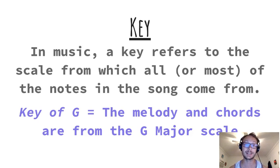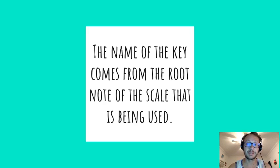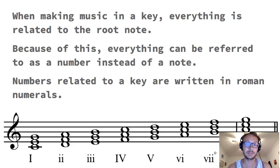Anything that's diatonic is in reference to any note or chord coming from the scale — like the key of G. The name of the key comes from the root note of the scale being used. When making music in a key, everything is related back to the root note, so everything can be referred to as a number. The numbers related to a key are often written in Roman numerals — here we see the diatonic chords of C major: one, two, three, four, five, six, and seven.